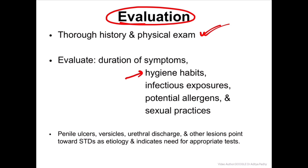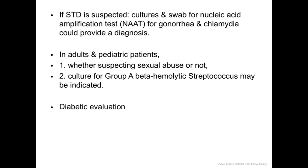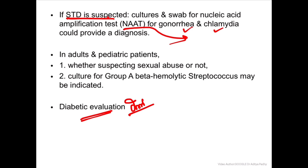To evaluate the patient: first take a proper history and do a visual physical examination. Evaluate regarding hygiene, infectious exposures, potential allergens, and sexual practices. If you are finding urethral discharge, you should rule out sexually transmitted diseases. If STD is suspected, go for NAAT - nucleic acid amplification test - to confirm diagnosis for gonorrhea and chlamydia. Diabetic evaluation is a must for any adult case.